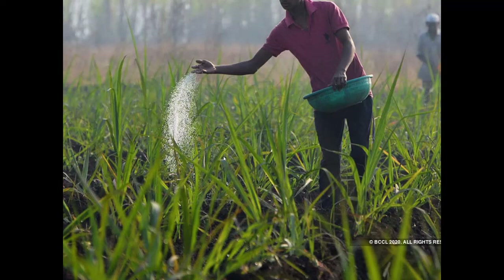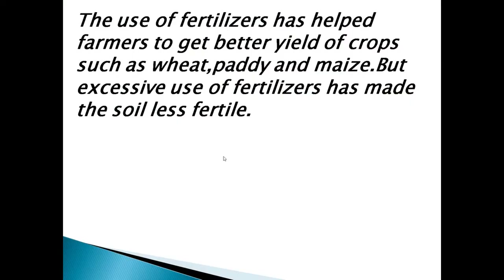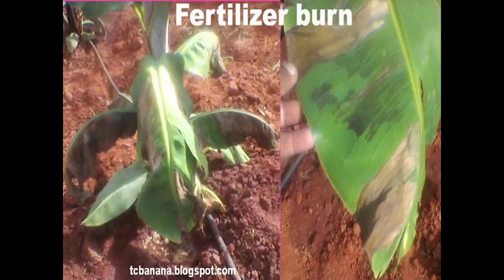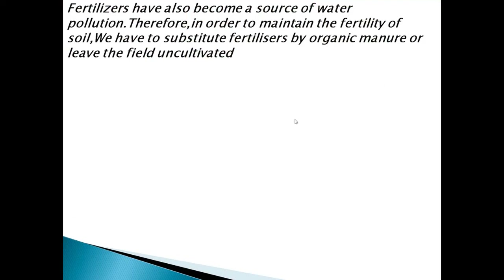The farmer applies fertilizer to his field. The use of fertilizers has helped farmers get better yields of crops such as wheat, paddy and maize. However, excessive use of fertilizers has made soil less fertile. If the farmer continuously uses fertilizer in excess, the field becomes infertile. Excessive fertilizer usage also results in fertilizer burn — you can see browny-blackish patches on the leaves.